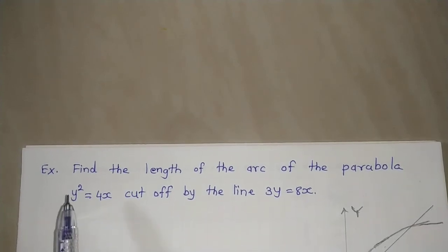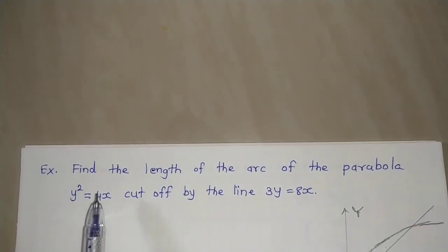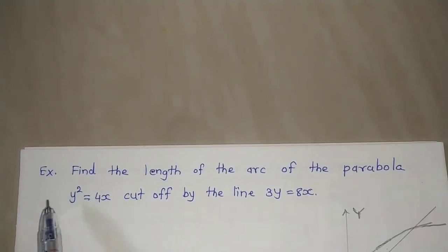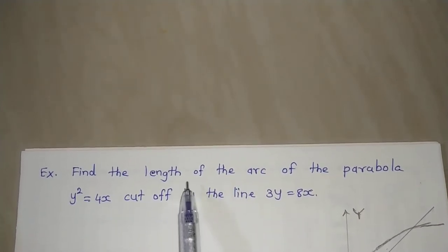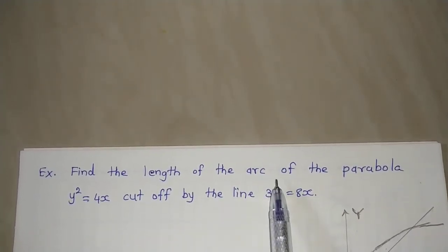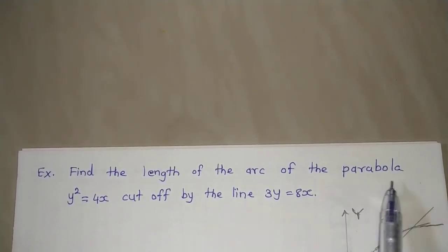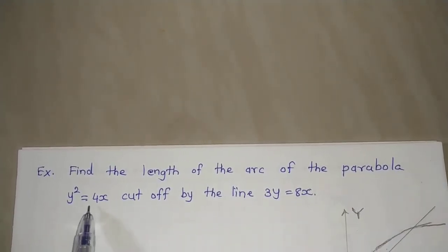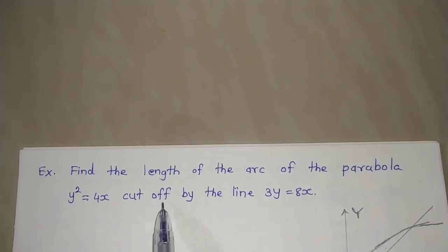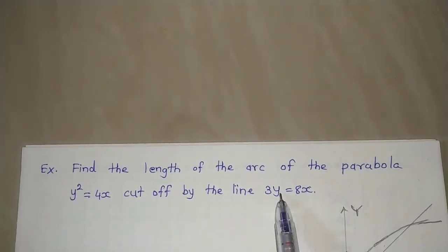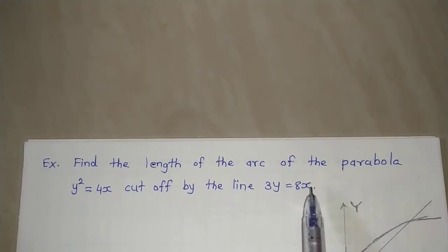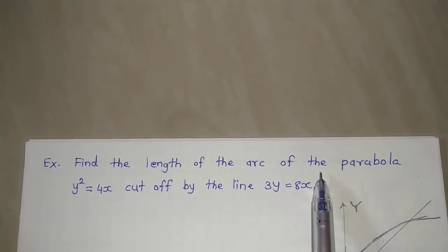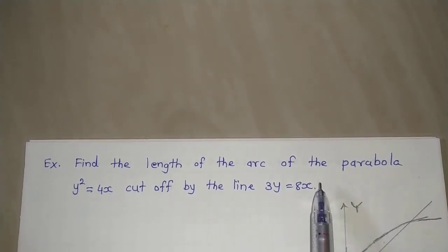Hello friends, in this video lecture we are going to discuss this example: find the length of the arc of the parabola y² = 4x which is cut off by the line 3y = 4x. This is an example based on rectification.